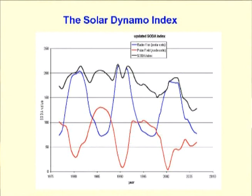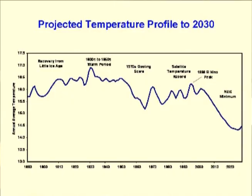Combining the rural US data set we saw earlier and the projected temperature decline response to weak solar cycles 24 and 25, this graph shows the expected decline to 2030. The temperature decline will be as steep as that of the 1970s cooling, but will go on for longer.